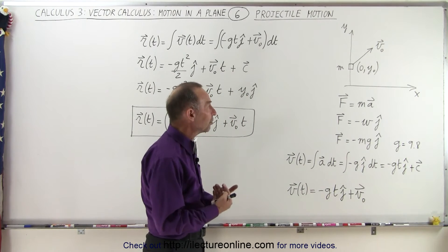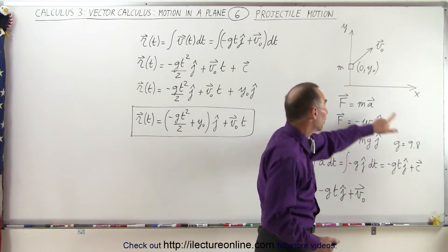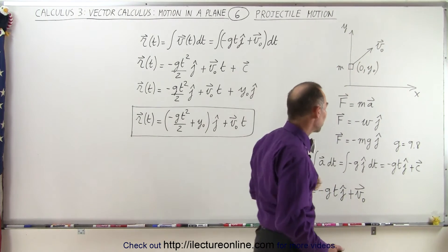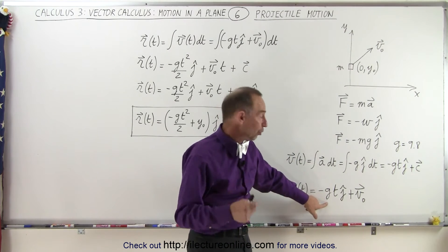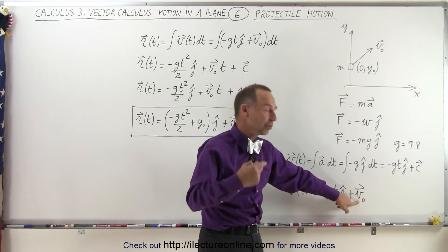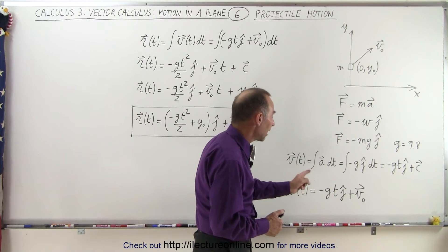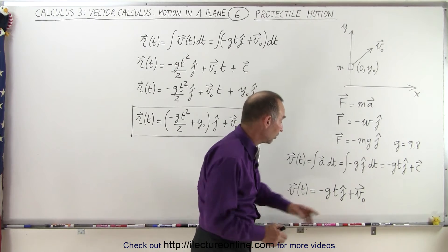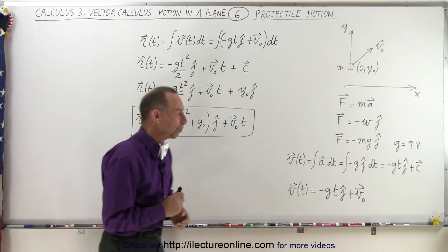So what is that constant of integration? Well, this means the initial velocity when t is equal to zero — the initial velocity of the object. So to get the total velocity, we get the velocity from integrating the acceleration plus the initial velocity v-sub-naught. We have minus g times t in the j direction plus v-initial. Notice when t is equal to zero, this term disappears and the velocity is simply equal to the initial velocity, which is what we expect.